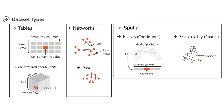Broadly speaking, there are three dataset types that you'll encounter in data visualization – tables, networks, and spatial data.